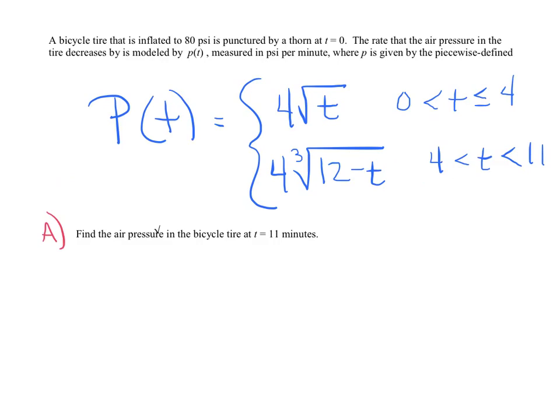Question 1 here. A bicycle tire is inflated to 80 PSI, is punctured by a thorn at time t equals 0. The rate at which the air pressure in the tire decreases is modeled by P of t, measured in PSI per minute, where P is given by the piecewise function defined below.